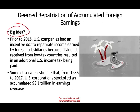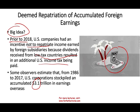This topic will cover the deemed repatriation of accumulated foreign earnings. What's the big idea? Prior to 2018, money was kept overseas — U.S. companies had an incentive not to bring that money back home, kept by foreign subsidiaries in tax haven countries. Because dividends received from low-tax-income countries resulted in additional tax being paid, some observers, based on different studies, said there was closer to $3.1 trillion in overseas earnings, which is a lot of money.